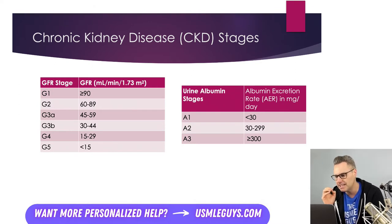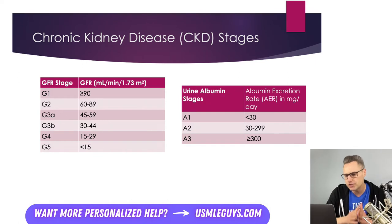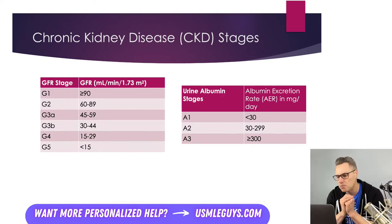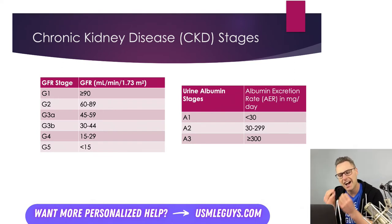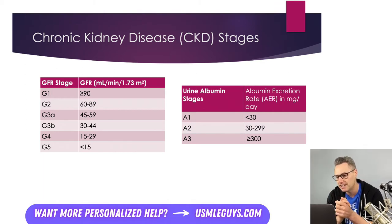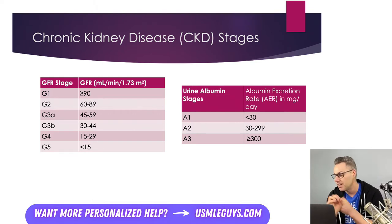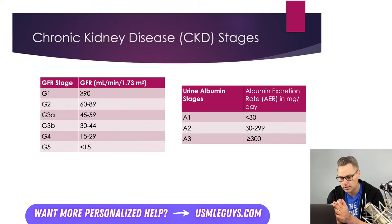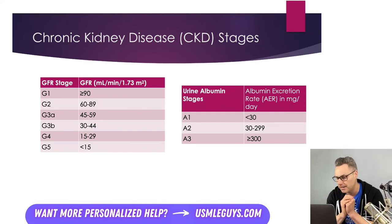Even within the same stage, the lower the GFR, the higher the risk of complications. Additionally, urine albumin levels have been staged from A1 to A3. Higher albumin excretion rates have been linked to increased risk for the progression of CKD, development of end-stage renal disease, and increased mortality. These risks are independent of the patient's GFR stage, though the GFR stage is a stronger predictor of CKD complications than the urine albumin stage.